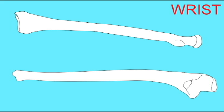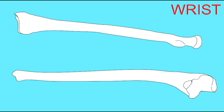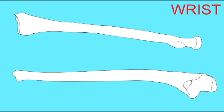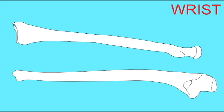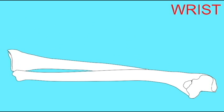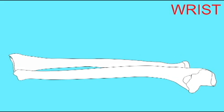Although there is a large number of bones in the vicinity of the wrist joint — two bones of the forearm and a series of carpal bones — the wrist joint is composed of three of these bones: the radius of the forearm and then two carpal bones, the scaphoid and the lunate.